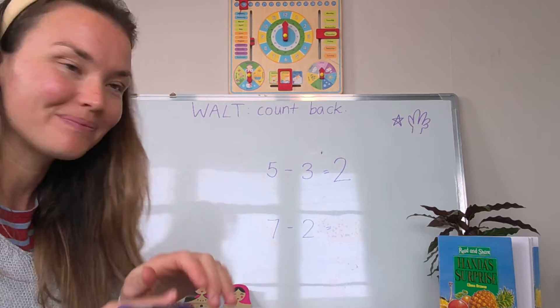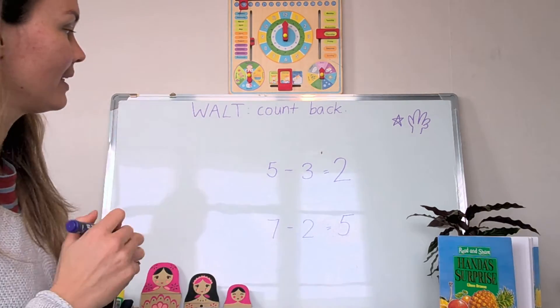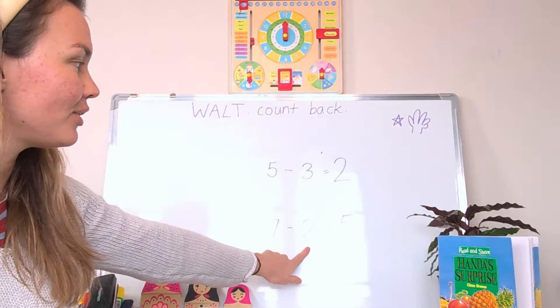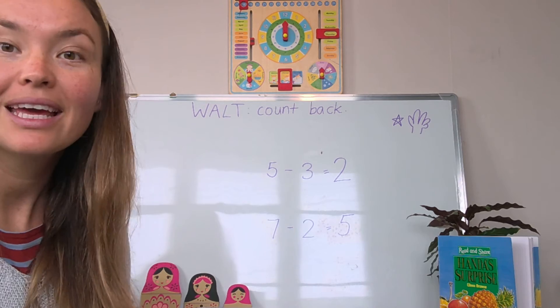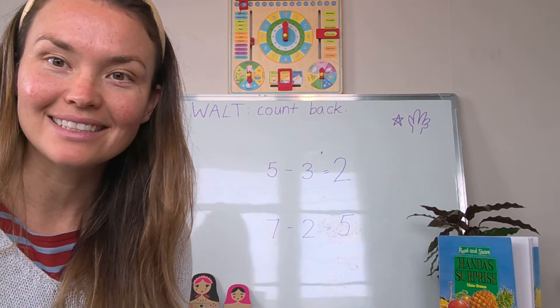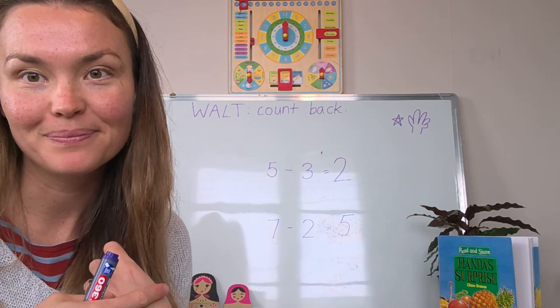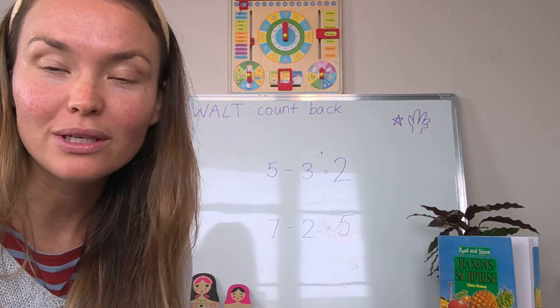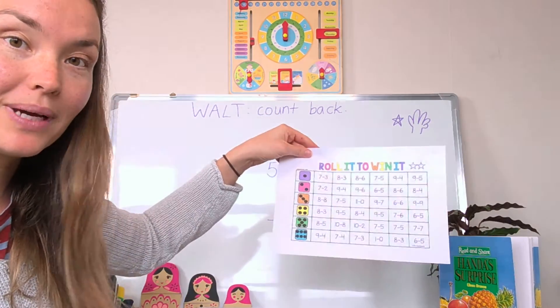Let's write that down. Five. So seven take away two equals five. That is how we can use our hands to count back and find what is left. If you do the one star challenge of roll it to win it.